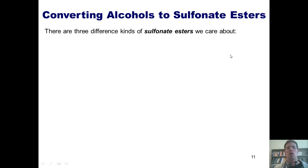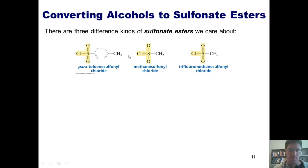Here are the three different kinds of sulfonate esters that we will care about in this class. If this R' group is a benzene ring bonded to a methyl group, we call this para-toluene sulfonyl chloride or sometimes just tosyl chloride or TsCl.